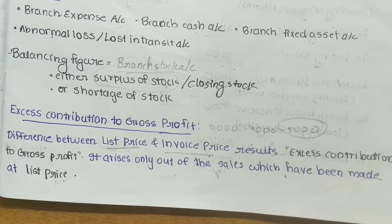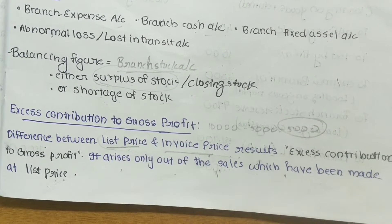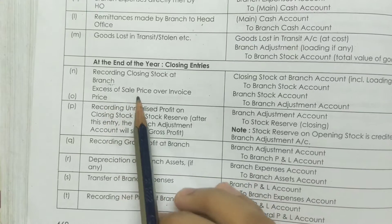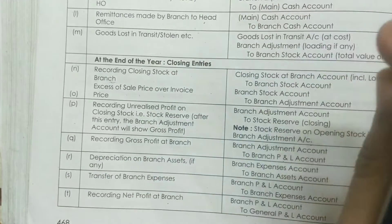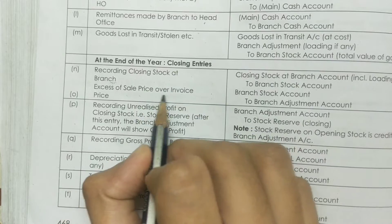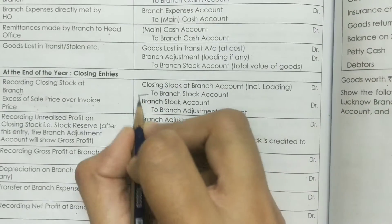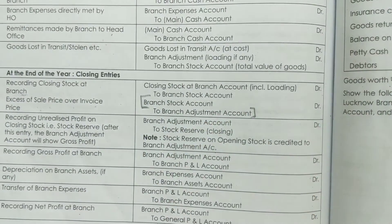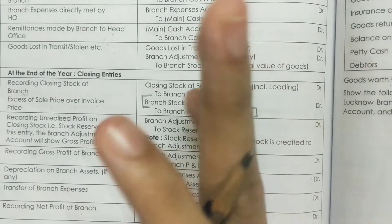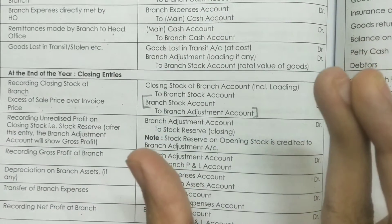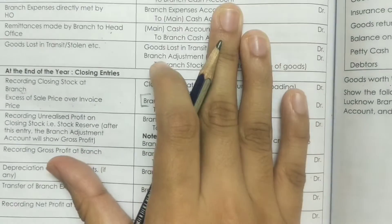If you have any doubts so far, you can comment below. There is one important entry to keep in mind for Illustration Number Five: when there is an excess of sale price over invoice price — since list price is greater than invoice price — we pass the entry: Branch Stock Account debit to Branch Adjustment Account. The difference amount, for example five thousand, is recorded with this entry.